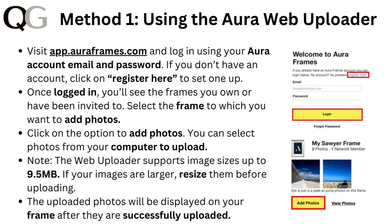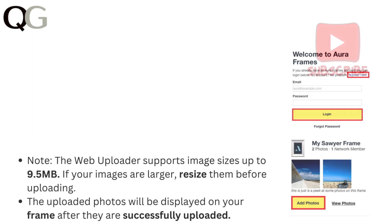Click on the option to add photos. You can select photos from your computer to upload. Note: the web uploader supports image sizes up to 9.5 MB. If your images are larger, resize them before uploading. The uploaded photos will be displayed on your frame after they are successfully uploaded.